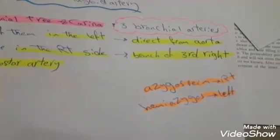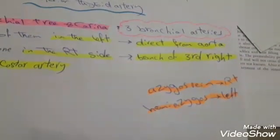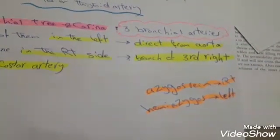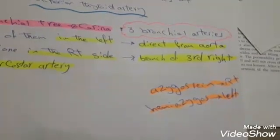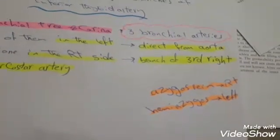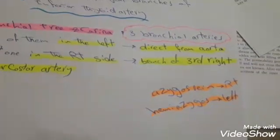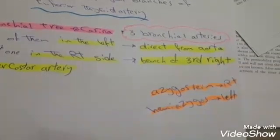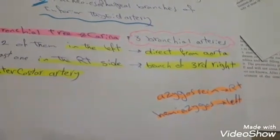Also, the bronchial veins on the right side drain into the esophageal vein, and on the left side they drain into the hemiazygous vein. Have a nice day.